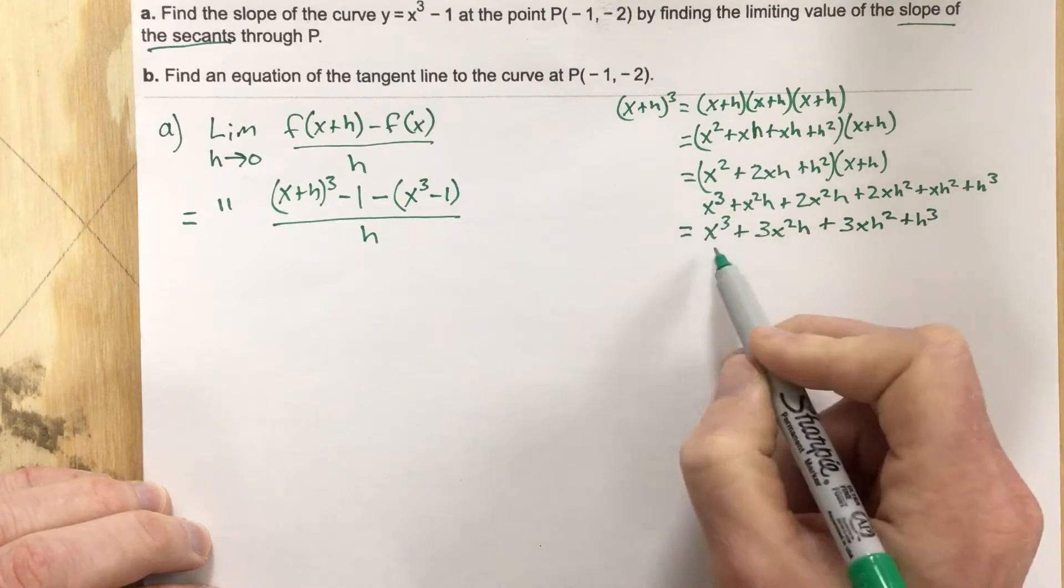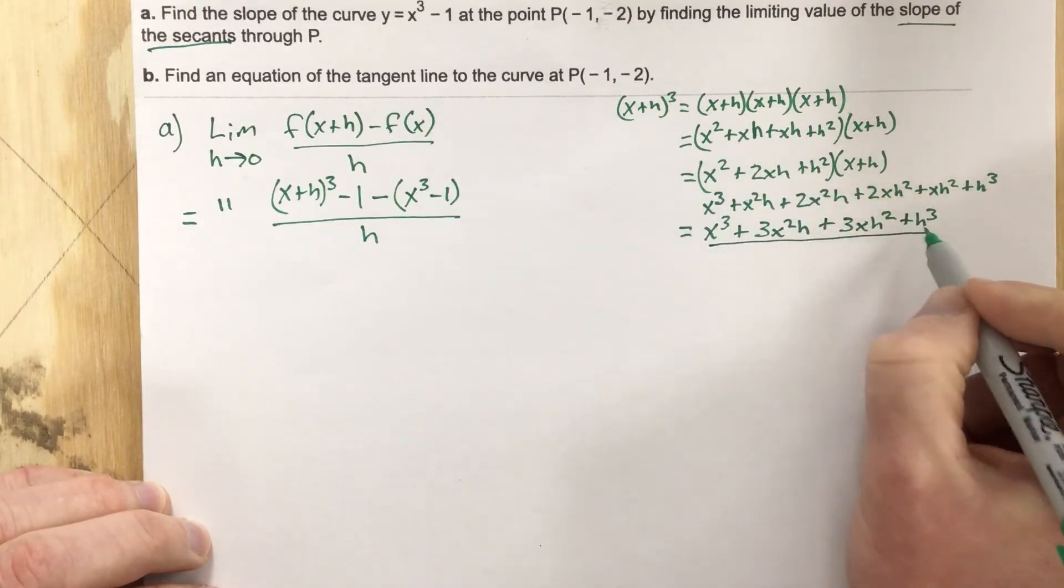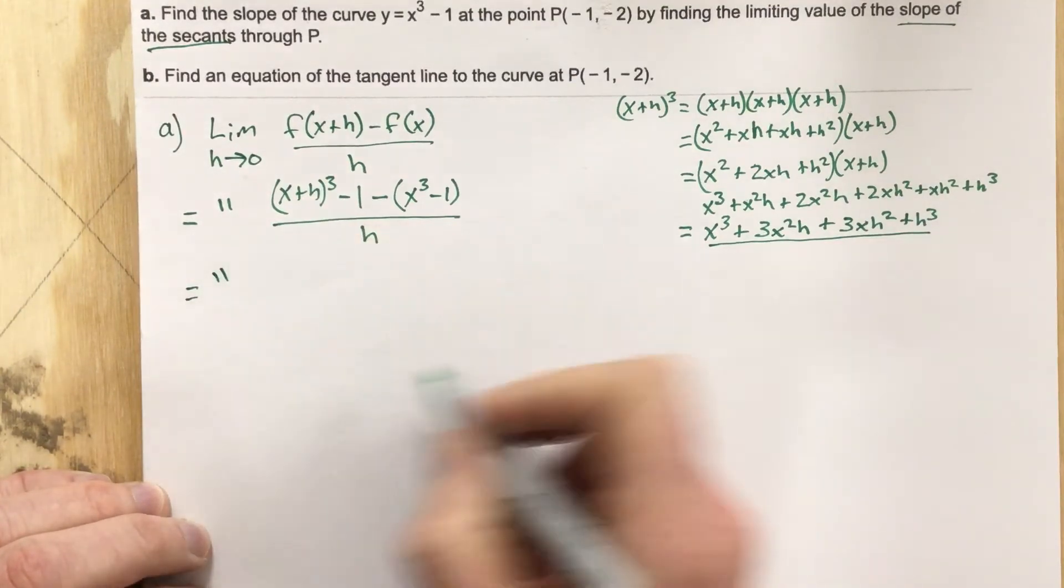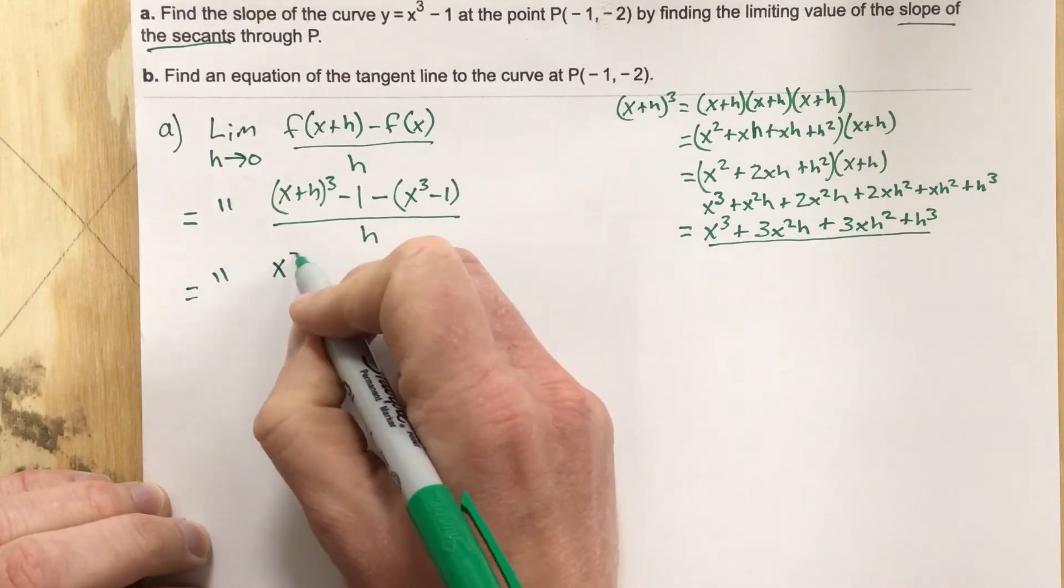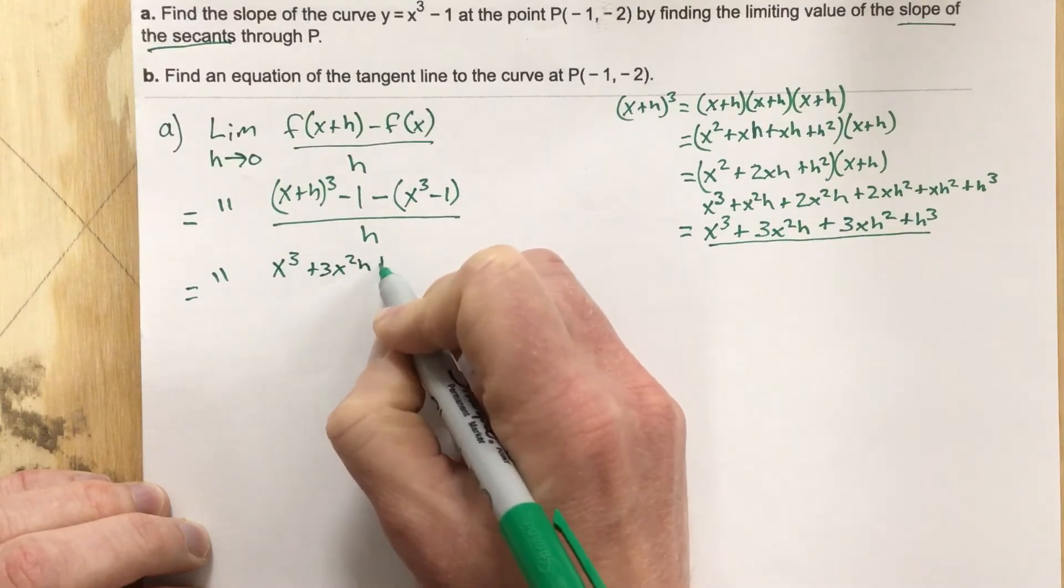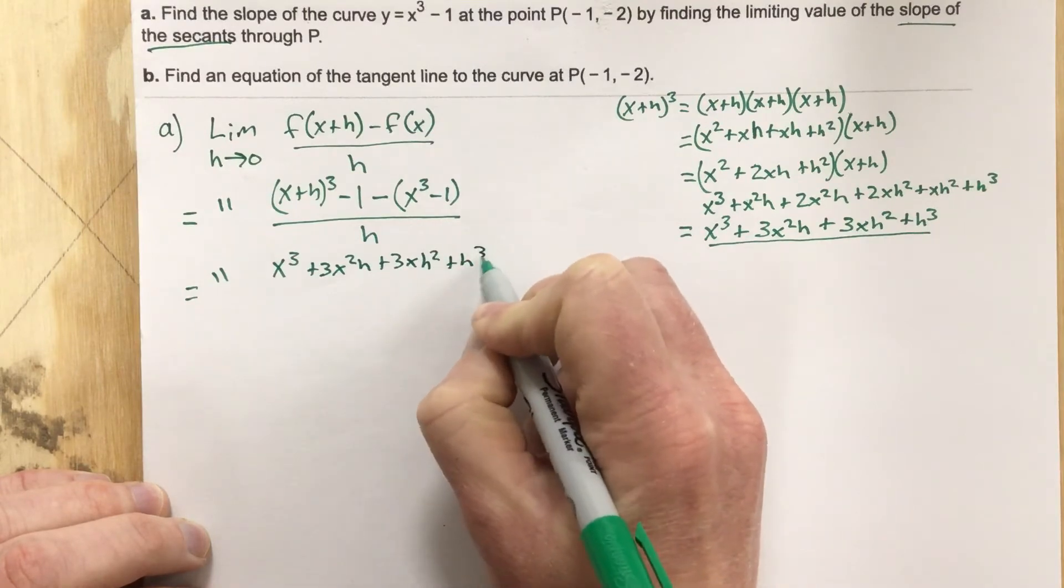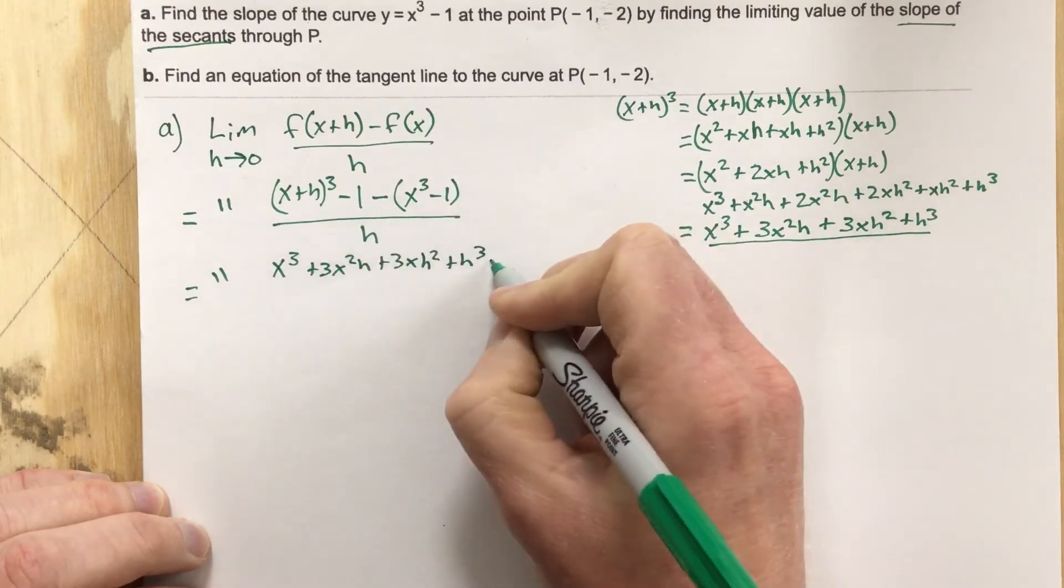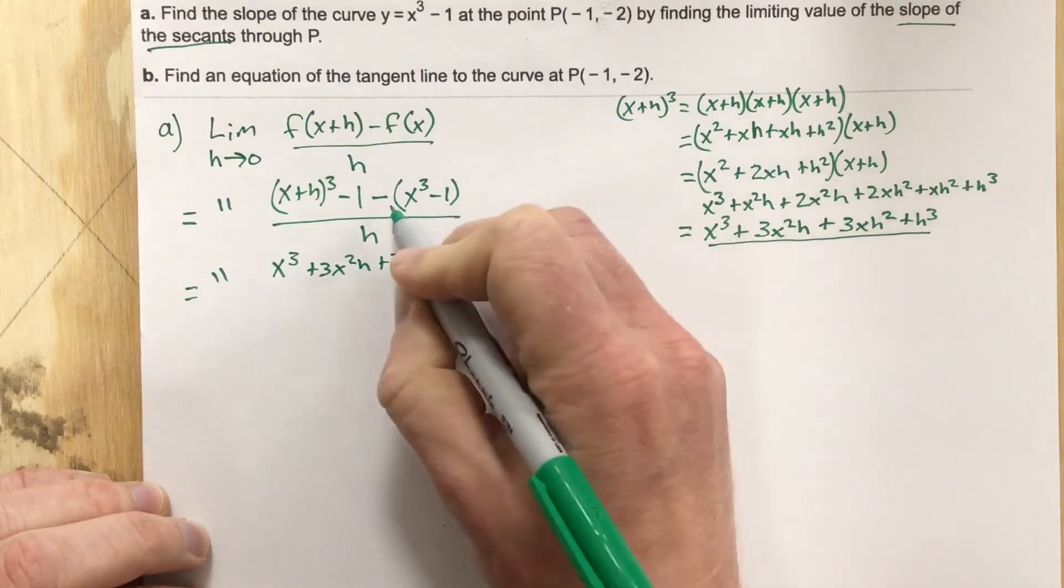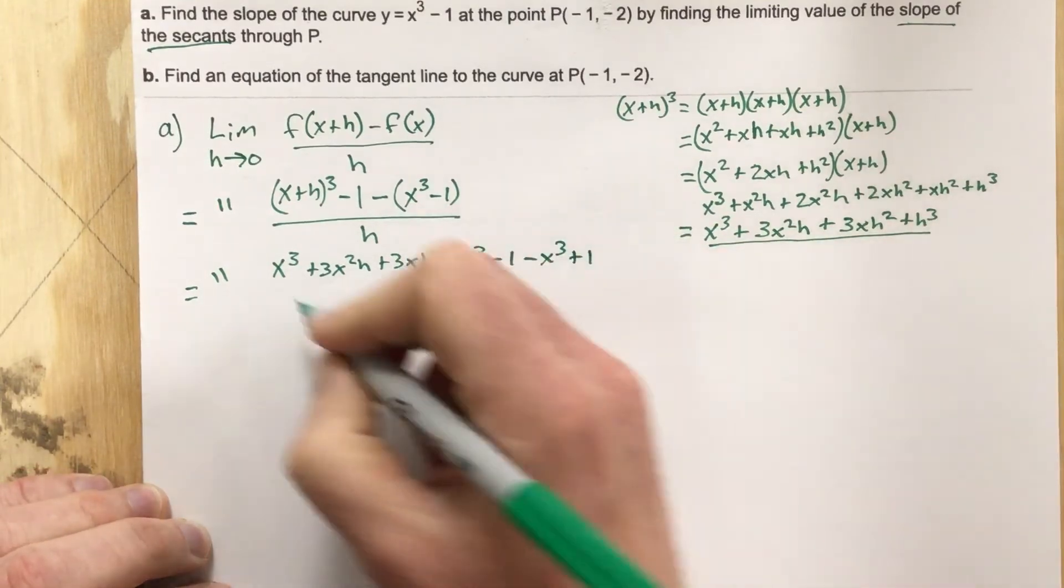All right, all this equals x plus h cubed. So we're going to take this and plug it in here. x cubed plus 3x squared h plus 3xh squared plus h cubed minus the 1 minus x cubed, when I distribute the negative to each term plus 1 because negative times a negative, all over h.